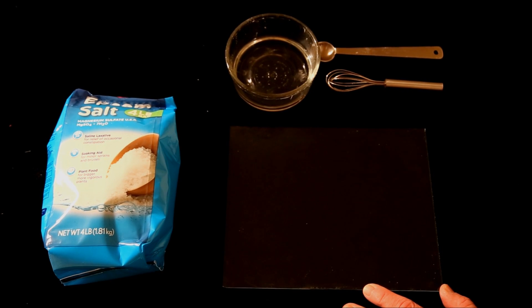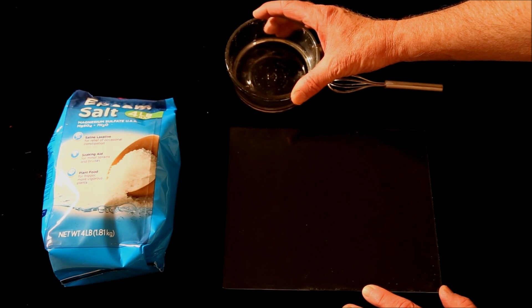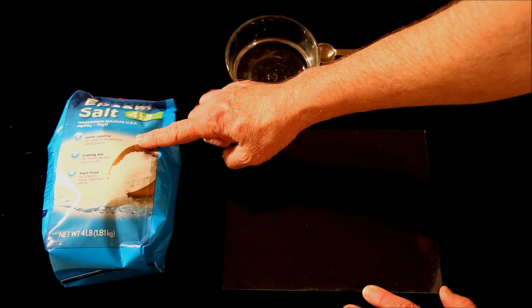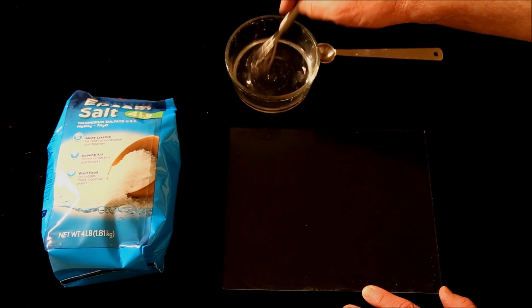To make Epsom salt frost crystals, take half a cup of hot water and add to it a third of a cup of Epsom salt. Mix the two together until the crystals dissolve.